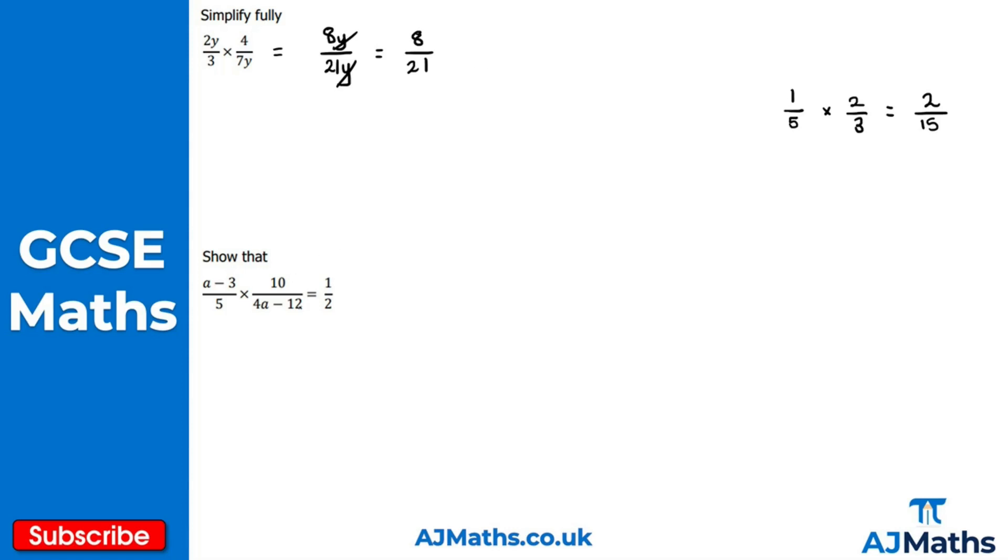For this next one, we're asked to show that (a-3)/5 times 10/(4a-12) equals 1/2. We use the same method as the previous example. Multiply the numerators together: a-3 times 10, which is 10 lots of a-3.